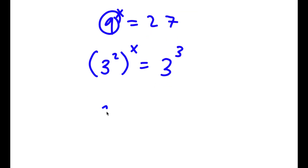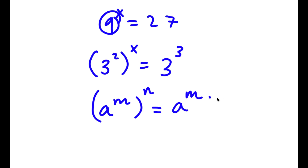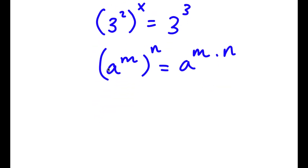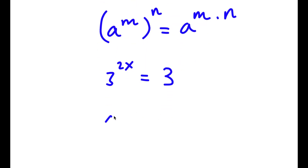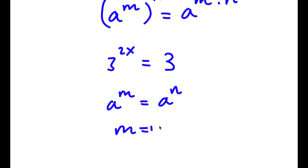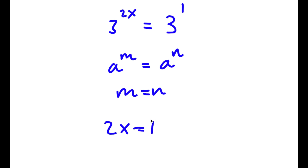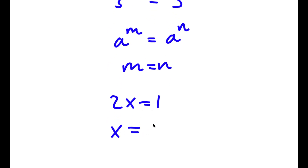If I have something in the form a to the power of m to the power of n, this equals a to the power of m times n. So 3 squared to the power of x equals 3 to the power of 2x. And if a to the power of m equals a to the power of n, then m equals n. So I have 2x is equal to 1, meaning x is equal to 1 half.